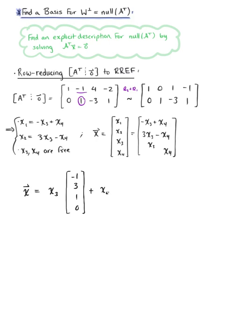Plus the scalar multiple x sub 4 multiplied by the column vector 1, negative 1, 0, 1.